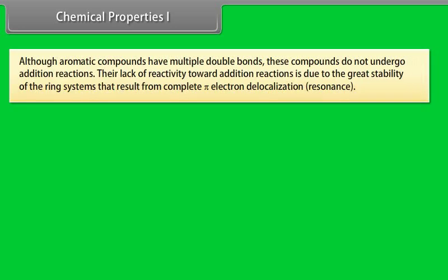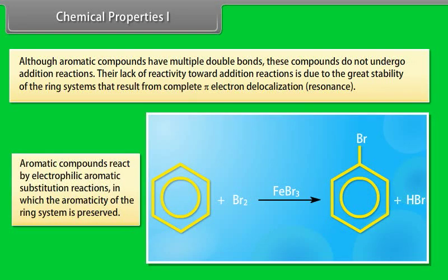Chemical properties. Although aromatic compounds have multiple double bonds, these compounds do not undergo addition reactions. Their lack of reactivity toward addition reactions is due to the great stability of the ring systems resulting from complete pi electron delocalization (resonance). Aromatic compounds react by electrophilic aromatic substitution reactions, in which the aromaticity of the ring system is preserved. For example, benzene reacts with bromine to form bromobenzene.